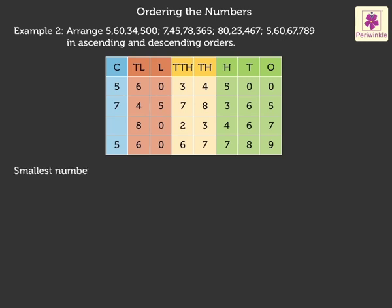Here, the smallest number is 80,23,467. Digit 7 being the greatest digit amongst all the digits in the crore's place, we get the greatest number as 7 crore 45,78,365.